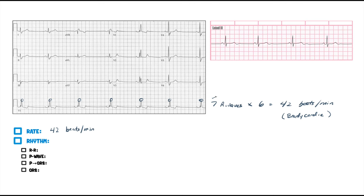Let's do the rhythm. What do we do? R to R. So let's go ahead and take this — we say R there, R there. We're going to count the boxes: 1, 2, 3, 4, 5, 6, 7 — and about half of that, 8. And we're going to come over here and say about 1, 2, 3, 4, 5, 6, 7, 8. I'm getting about 8 boxes between these.